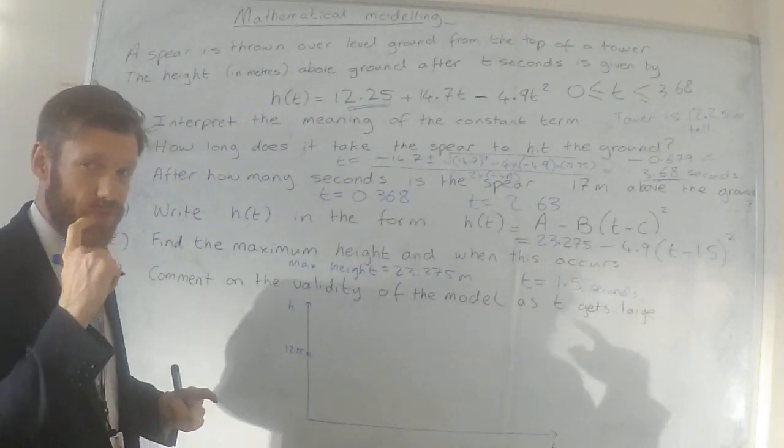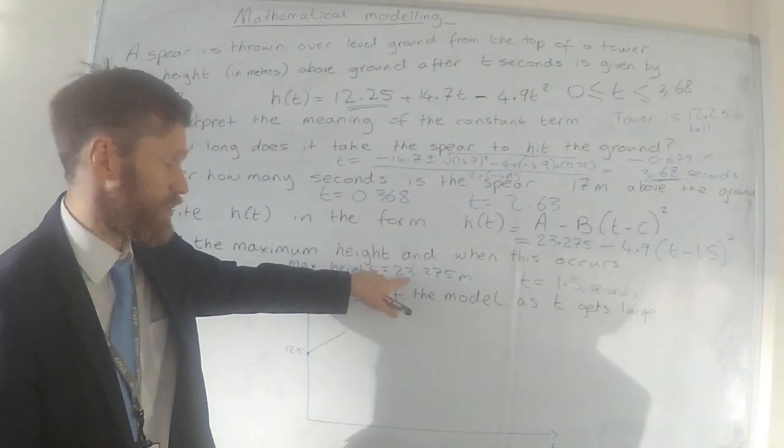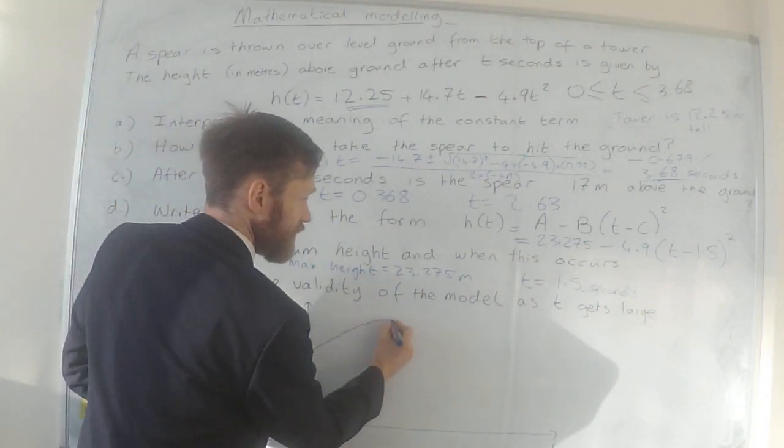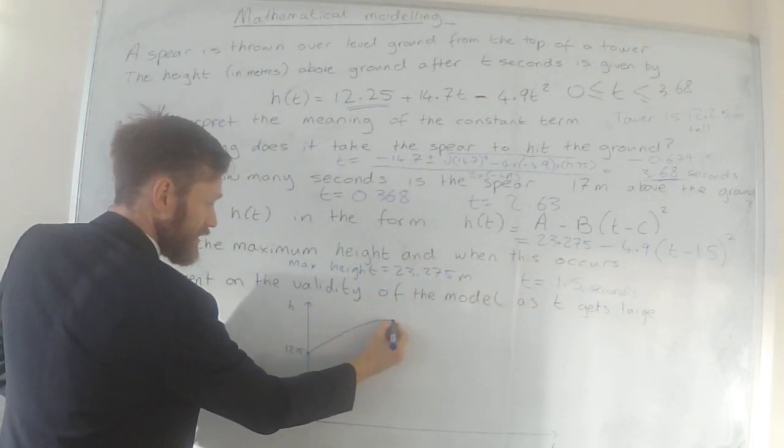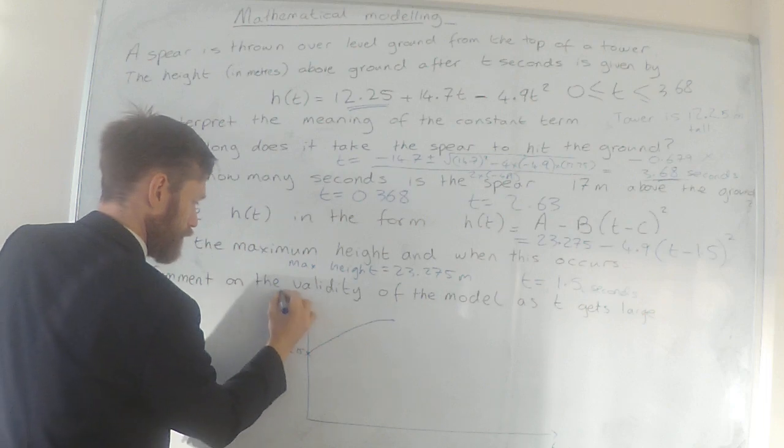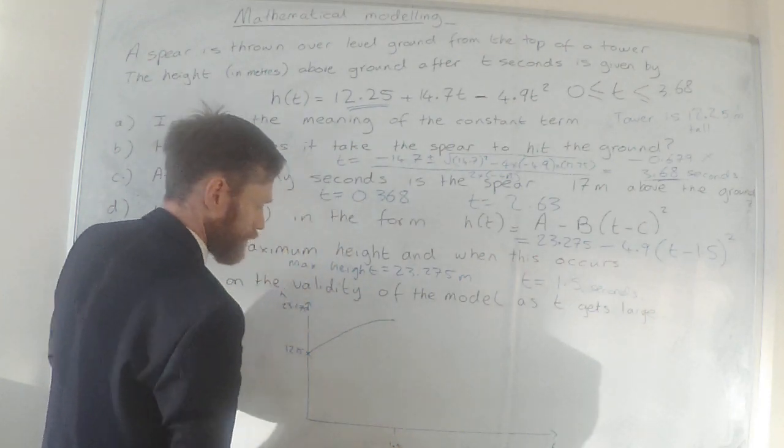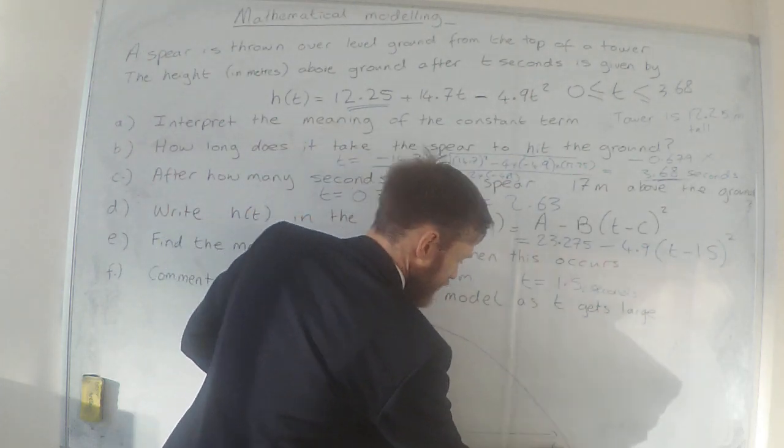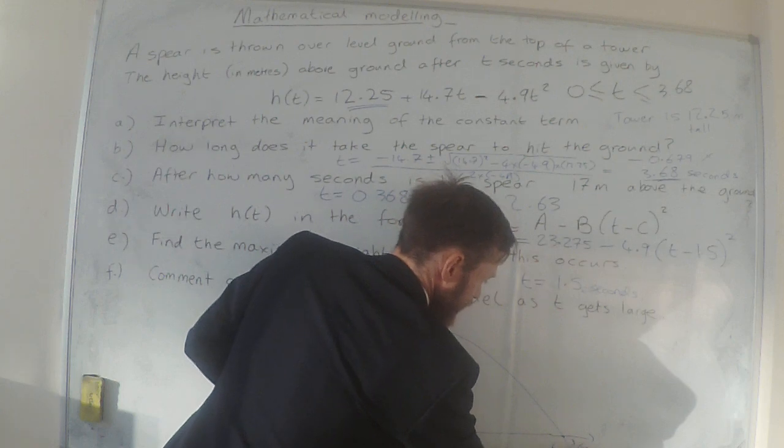And obviously the spear has been thrown up into the air. We know it gets to its maximum of 23.275 - it gets to a maximum of 23.275, so this is the maximum height there at 1.5 seconds. Maximum height, then it comes back down and we know it hits the ground, so when the height is zero, here at 3.68 seconds.